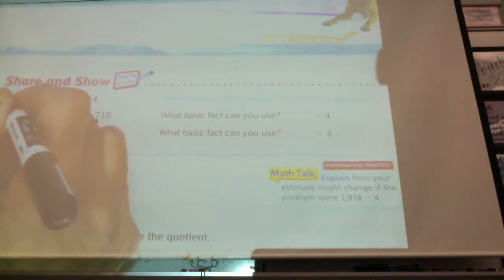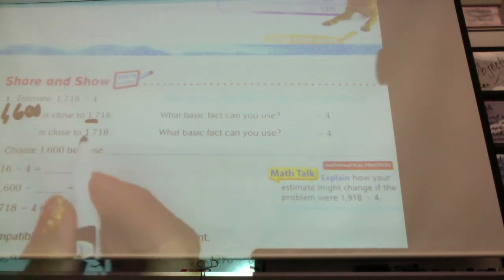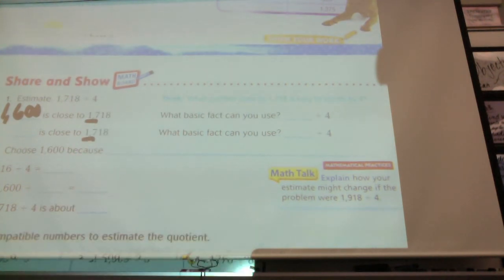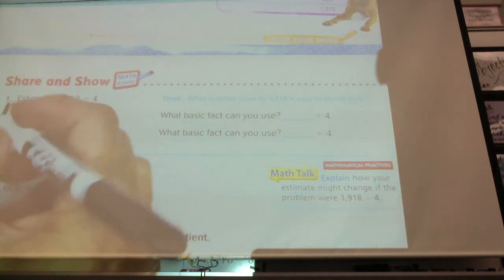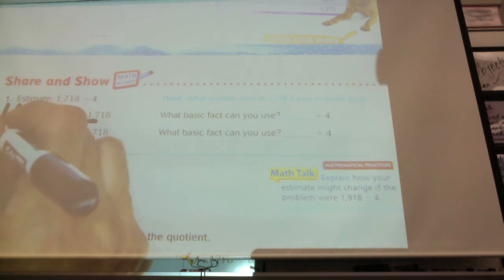1,600. Very good. Okay. And what did you get that's close to 17 on the upper end that's divisible by 4? Ronnie? 2,000. 2,000. Okay.